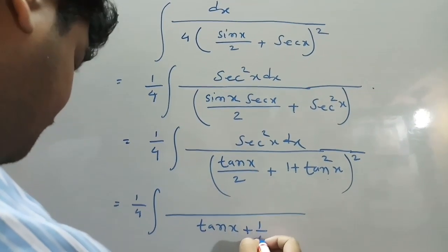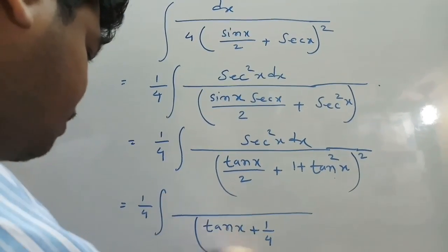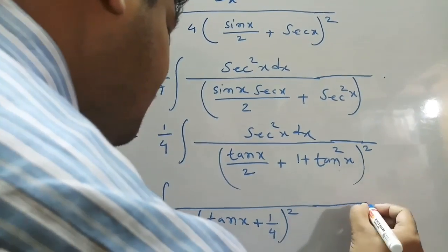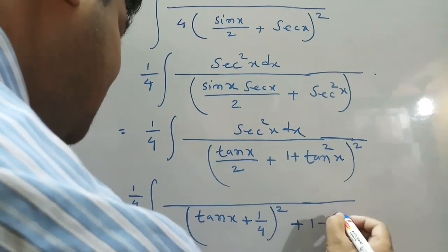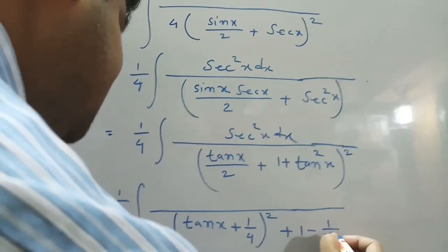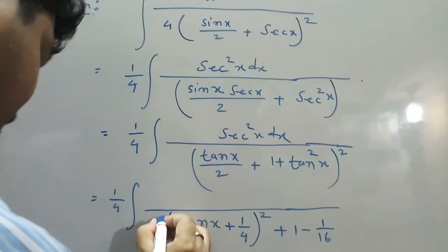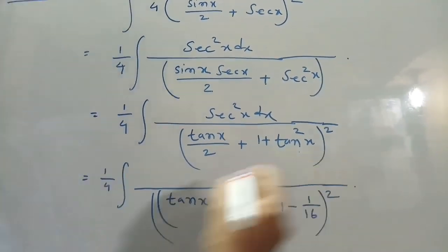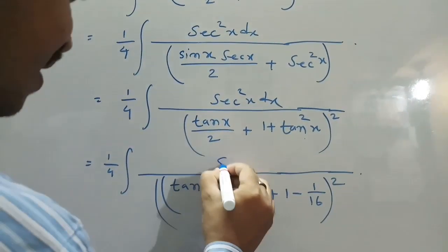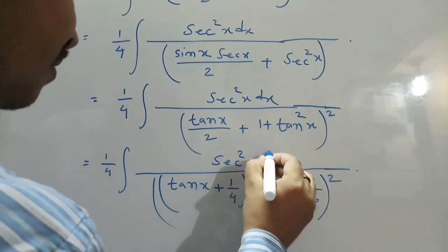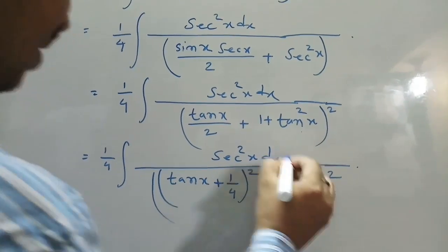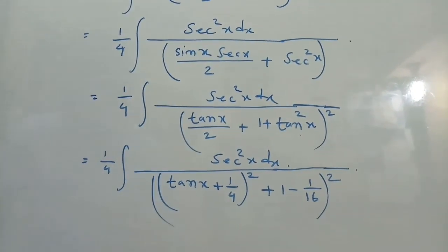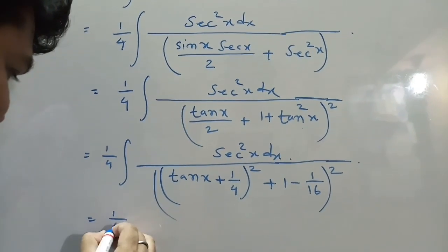After further simplification this becomes 1/4 times the integral of sec²x dx divided by (tan x + 1/4)² plus 1 minus 1/16, which simplifies to (tan x + 1/4)² plus 15/16. Next we proceed to the upper simplification.